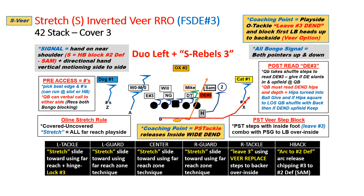The first variation is a classic stretch inverted veer run-run option. We're going to do stretch blocking with all the offensive line except the play side tackle and the H back. The tackle will take his release dependent on the alignment of the read key, the defensive end. In this case in the 4-2 stack he's an outside alignment, so he'll use his veer replace steps with his inside foot first working right up to the first linebacker head up or back. The H will always arc release in a two-by-two set to the number two defender from the outside in — in this case being the Sam backer.